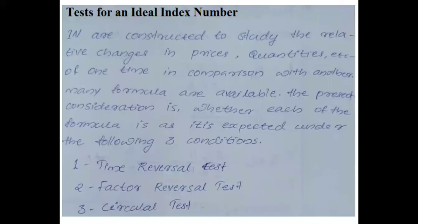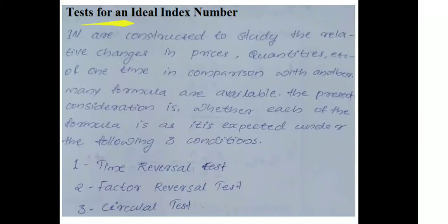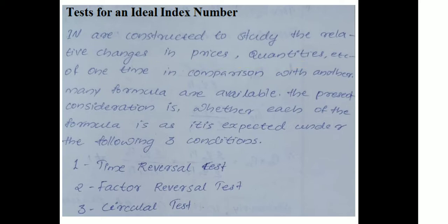Next test for an ideal index number. Index numbers are constructed to study the relative changes in price, quantities, etc., of one time in comparison with another. Many formulas are available. The present consideration is whether each formula is as expected under the following three conditions.